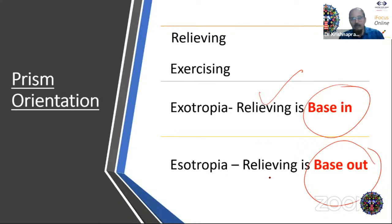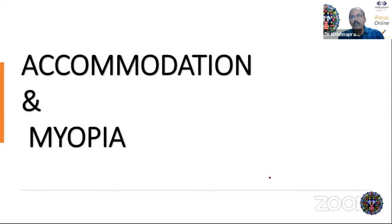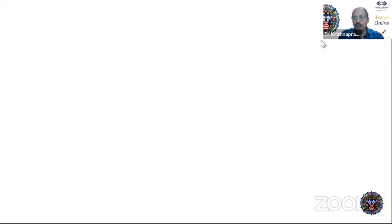Now, how does accommodation make a difference in different refractive errors? When you accommodate, you add plus power — convex power. That means when you accommodate, myopia increases. When you relax accommodation, myopia can decrease.